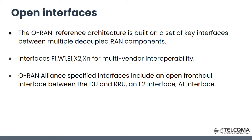The ORAN reference architecture is built on a set of key interfaces between multiple decoupled RAN components. Interfaces F1, W1, E1, X2, and XN are for multi-vendor interoperability. The ORAN alliance has also specified open fronthaul interface between the DU and RRU, the E2 interface, and the A1 interface.